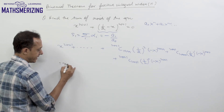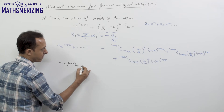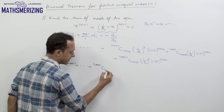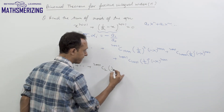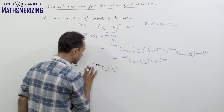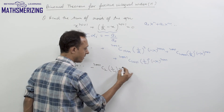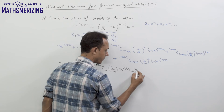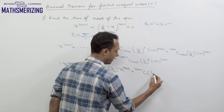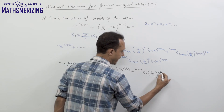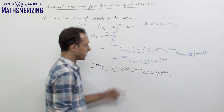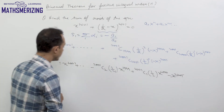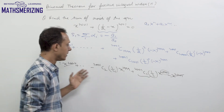So I can write it as: x to the power 2001, then plus 2001C1999 — which I can also write as 2001C2 — times 1/4 times minus x to the power 1999, then plus 2001C1 times 1/2, and then minus x to the power 2001. So the x to the power 2001 terms get cancelled, and it becomes a polynomial of degree 2000.